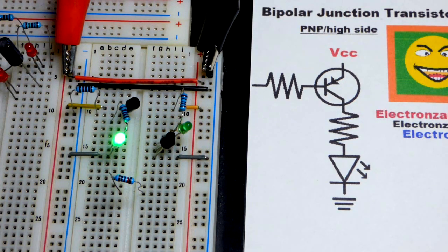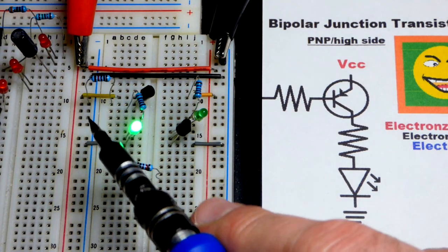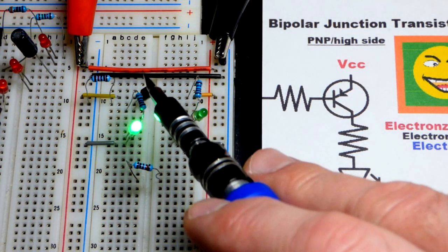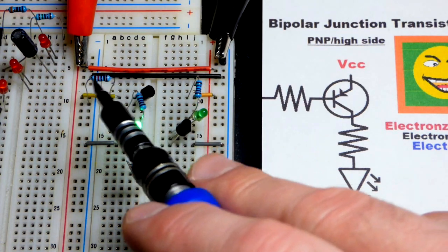So that's what's awkward about the PNP bipolar junction transistor in most cases. Is having to give a low input to the base. But that allows current to go from emitter to base. A very small amount of current. That's a 10,000 ohm resistor.